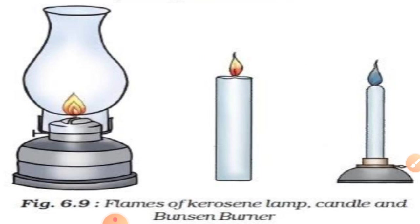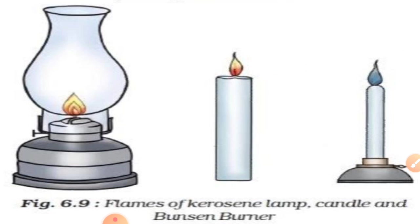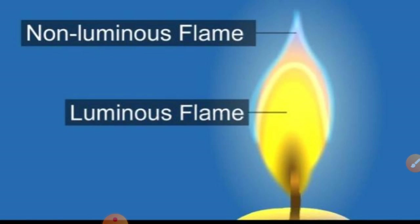Kerosene is a liquid fuel and wax is a solid fuel. Both vaporize on heating and burn with a flame. The kerosene lamp and candle produce a yellow flame on burning, while the LPG stove produces a blue flame.